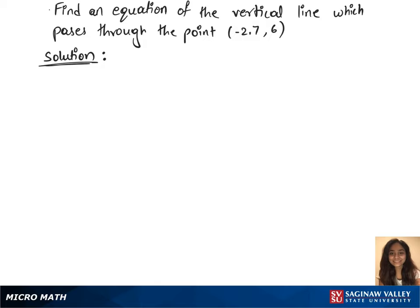To find an equation of the vertical line which passes through the point (-2.7, 6), we'll first use the vertical line formula, which is x equals c. Here, c is the x-intercept, so x equals -2.7.